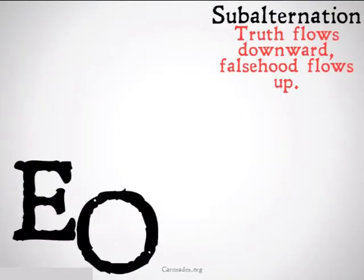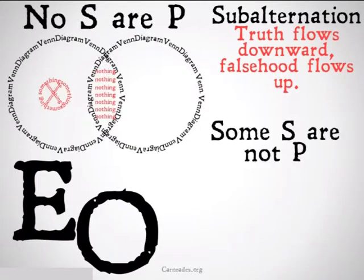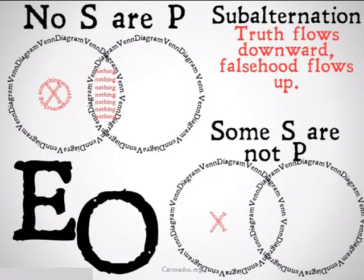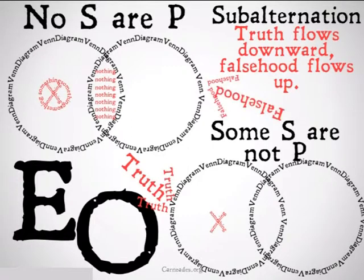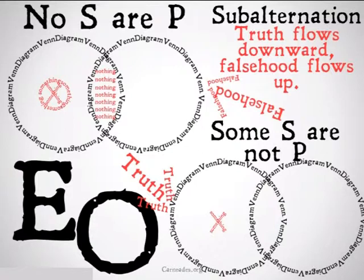Similarly, the subalternation relationship holds between E and O statements — 'No S are P' and 'Some S are not P.' Truth is supposed to flow downward and falsehood is supposed to flow up. However, it's going to be the fallacy of illicit subalternation if you conclude 'No S are P' from 'Some S are not P,' or if you conclude from 'It is not the case that no S are P' that 'It is not the case that some S are not P.'